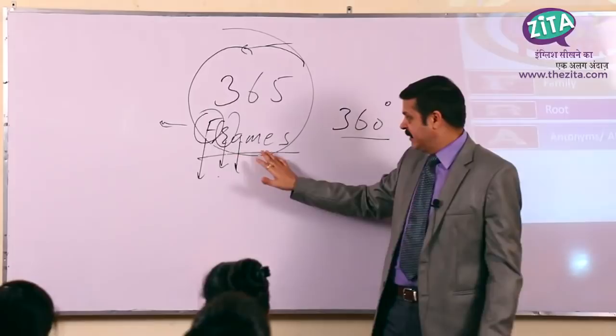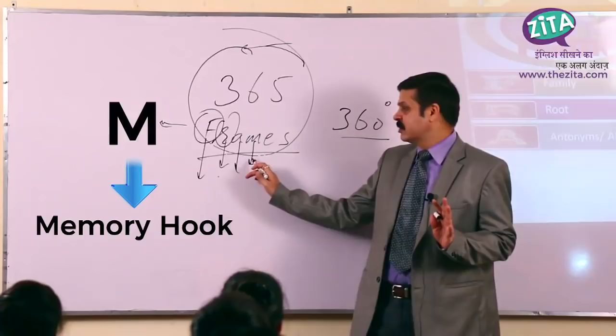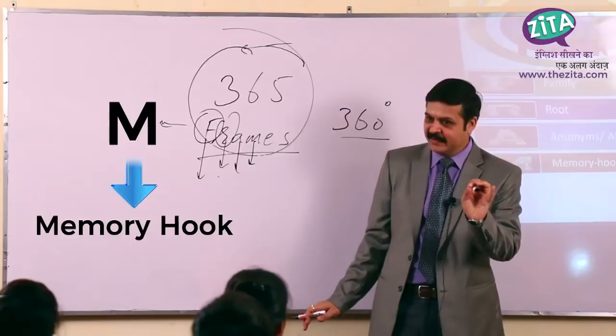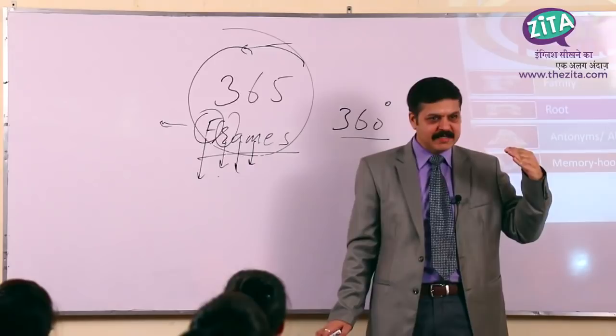And then we have — ये बहुत बढ़िया चीज़ है, ये आपके काम की चीज़ है। वैसे तो सारी चीज़ें आपके काम की हैं, लेकिन इसमें मज़ा भी आने वाला है। We have introduced a new concept which is called Memory Hook. ये क्या कराएगा? कई words जो हैं, वो बहुत बदमाश होते हैं — वो पहले पहले तो बहुत अच्छे लगते हैं, लेकिन फिर एकदम से गायब हो जाते हैं।